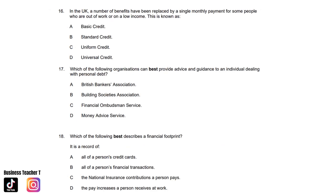Question sixteen: In the UK, a number of benefits have been replaced by a single monthly payment for some people who are out of work or on a low income. This is known as: A. Basic credit. B. Standard credit. C. Uniform credit. Or D. Universal credit. And the answer is D. Universal credit.